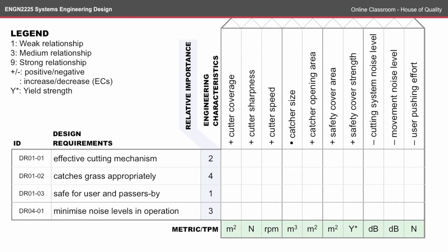We've also put in the metrics and all the TPMs. Here I've labelled the units for each of these, and you'll notice a Y* which is explained in the legend as yield strength.